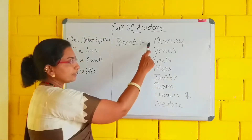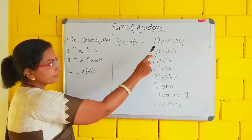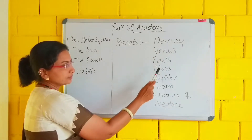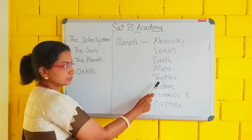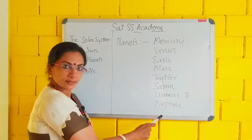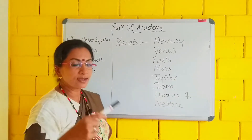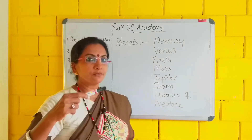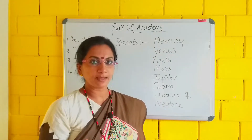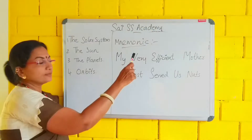Here come the names of the planets. Which are the planets? Mercury, Venus, Earth, Mars, Jupiter, Saturn, Uranus and Neptune. These are the planets and next I will give you one easy method for remembering the names of these planets.